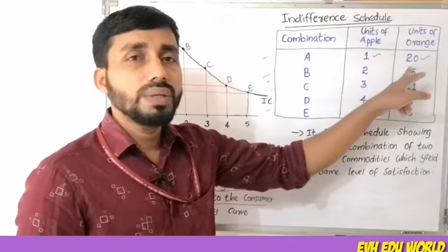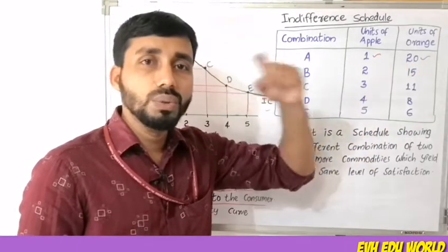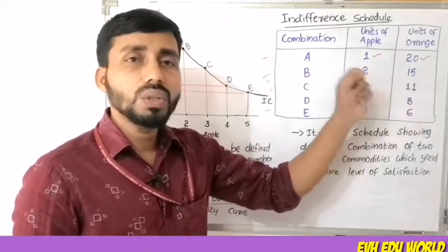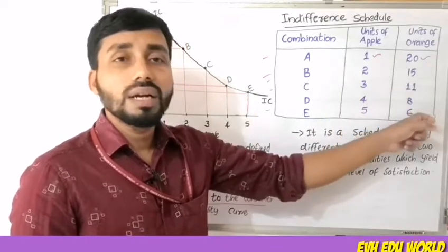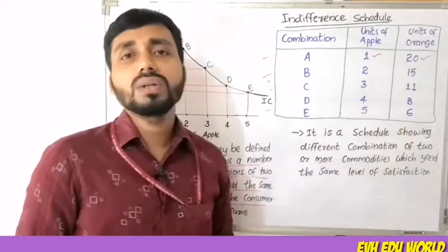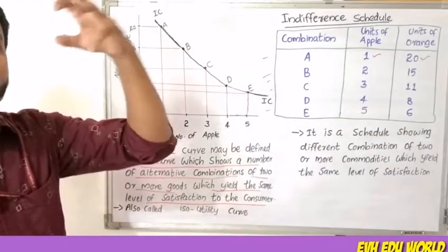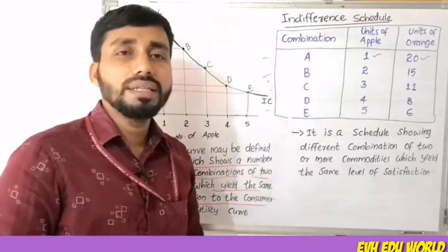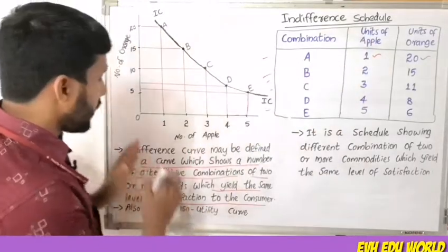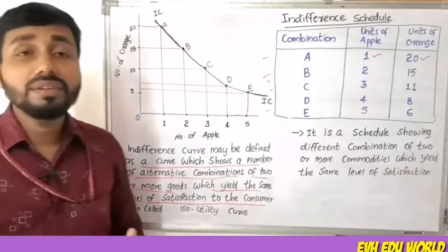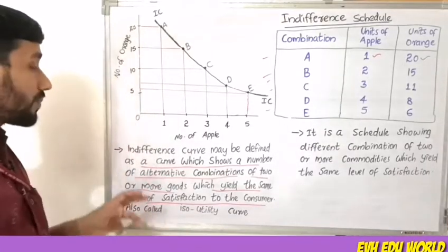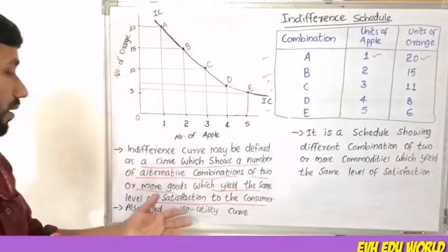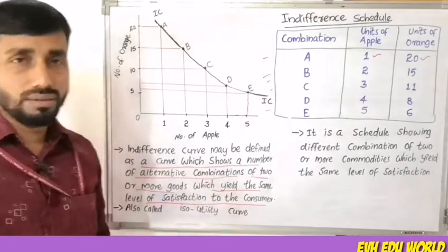Each combination — 1 apple, 2 apples with 15 oranges, 3 apples with 15 oranges, 4 apples with 8 oranges, 5 apples with 6 oranges — gives the same level of satisfaction. These are all the same in terms of satisfaction. This is the concept of the Indifference Curve.